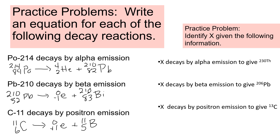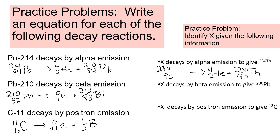We can also work in the other direction: if we know the daughter, find the parent. We know alpha — 4-2 He — results in 230-Th. Th is element 90. Adding up the bottom numbers: 2 plus 90 is 92. Adding up the top numbers: 4 plus 230 is 234. Element number 92 is uranium. So the parent is U-234.